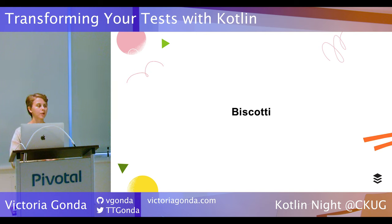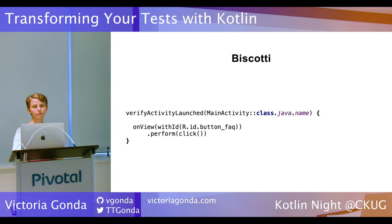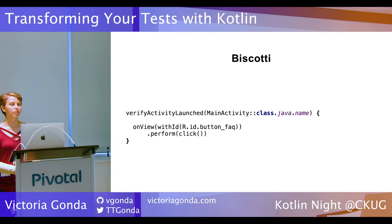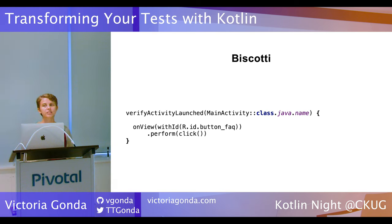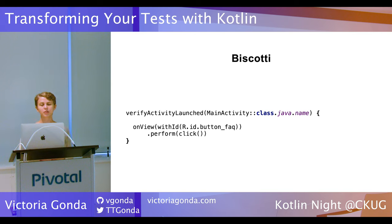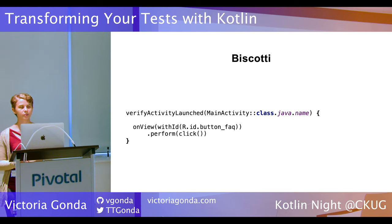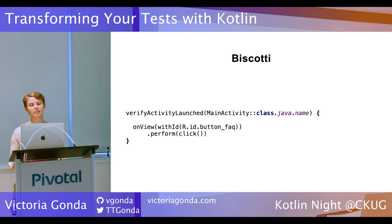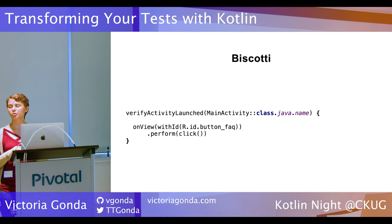One more library is Biscotti, a small one we're using internally at Buffer for Android tests. We looked at 'verifyLinkOpened' towards the beginning, and this is from that same library. Here we have 'verifyActivityLaunched', which is just saying this screen should have been launched — for example, that the main screen should be launched when we click this FAQ button. It's one of the ways you can take some of these properties and build your own thing specifically for your tests.